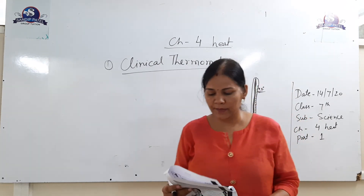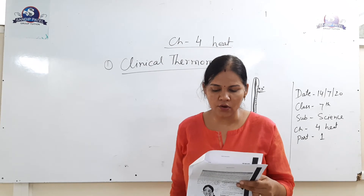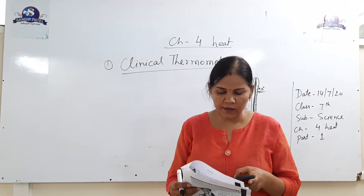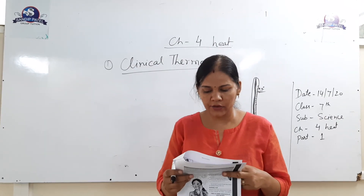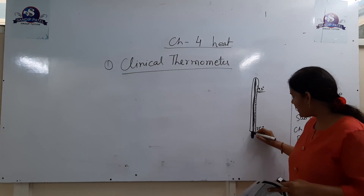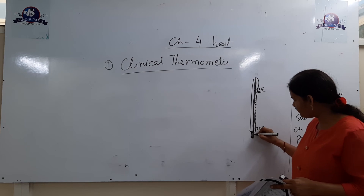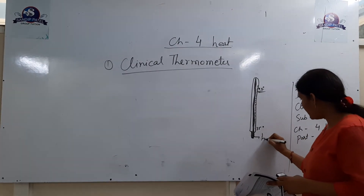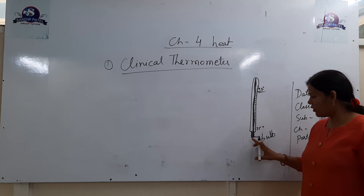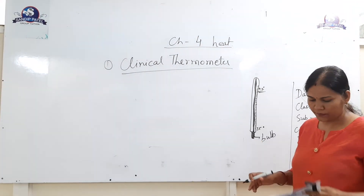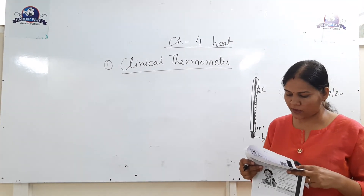This is a very important point. The clinical thermometer consists of a long, narrow, uniform glass tube. It has a bulb at one end. This bulb contains mercury. Outside the bulb, a small shiny thread of mercury can be seen inside the glass tube. If you do not see a mercury thread, rotate the thermometer a bit until you see it.